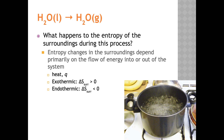Now what about the entropy of the surroundings during this boiling process? The entropy changes to the surroundings depend primarily on the flow of energy into or out of the system. This energy flow is called heat, abbreviated q. When the thermal energy of the surroundings increases, the kinetic energy in random molecular motion, vibration, and rotation increases — more random motion means more disorder and therefore more entropy for the surroundings. When the thermal energy of the surroundings decreases, random motion decreases and there's less entropy for the surroundings.